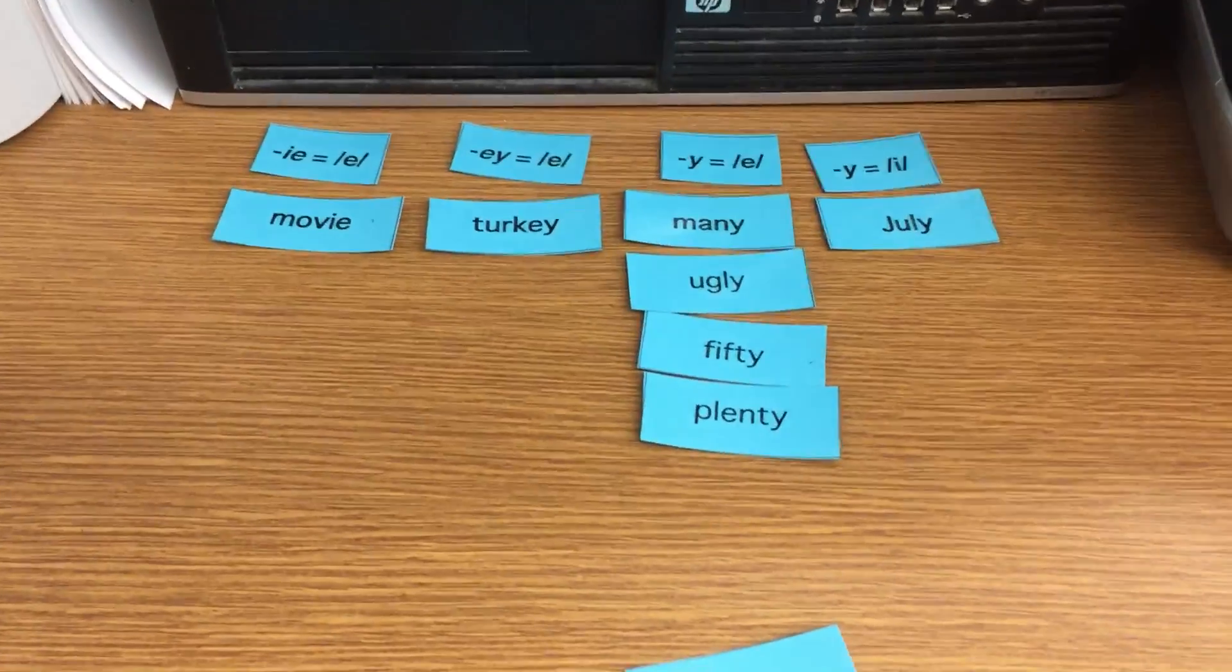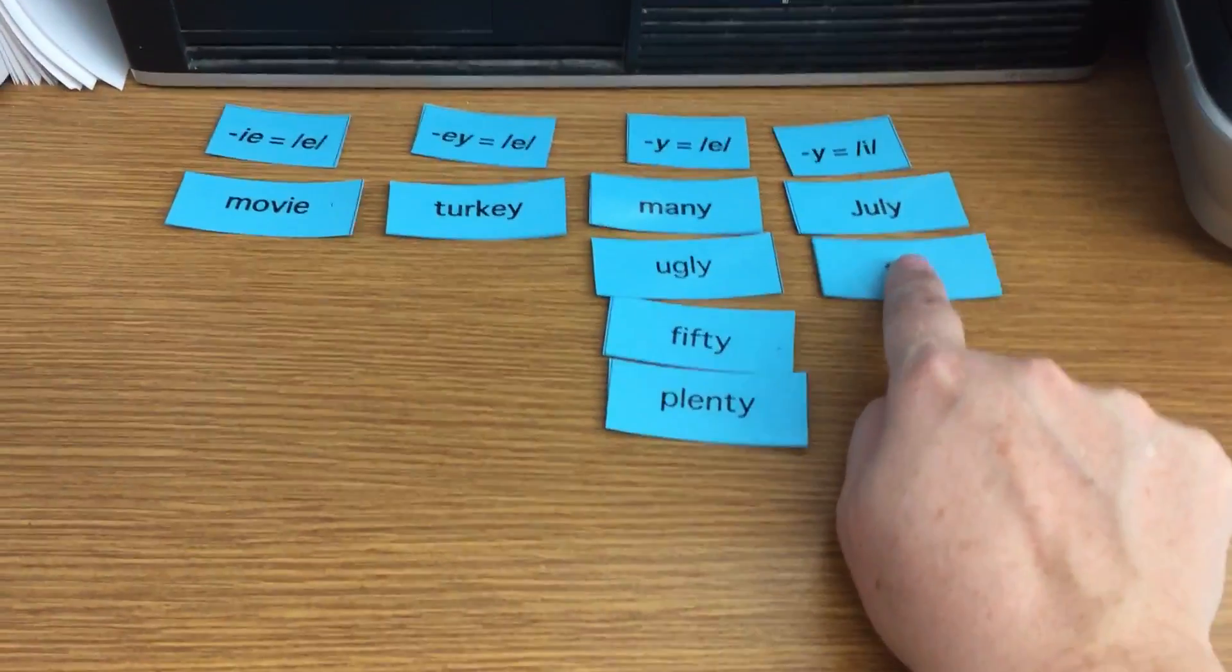Okay, now that you've sorted them, let's check the rest of them. Try has an I sound, so it's going to go under July.